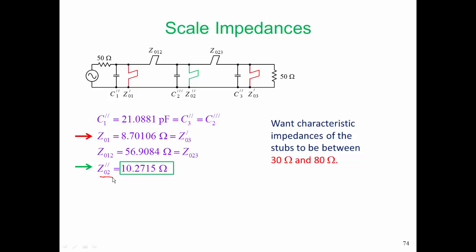A good choice is let's take that higher impedance line up to 80 ohms. So we're going to scale it to 80 ohms. To scale it to 80 ohms, that is increasing things by a factor of about 8, we're going to have to scale the impedances of every element in that circuit by the same factor.